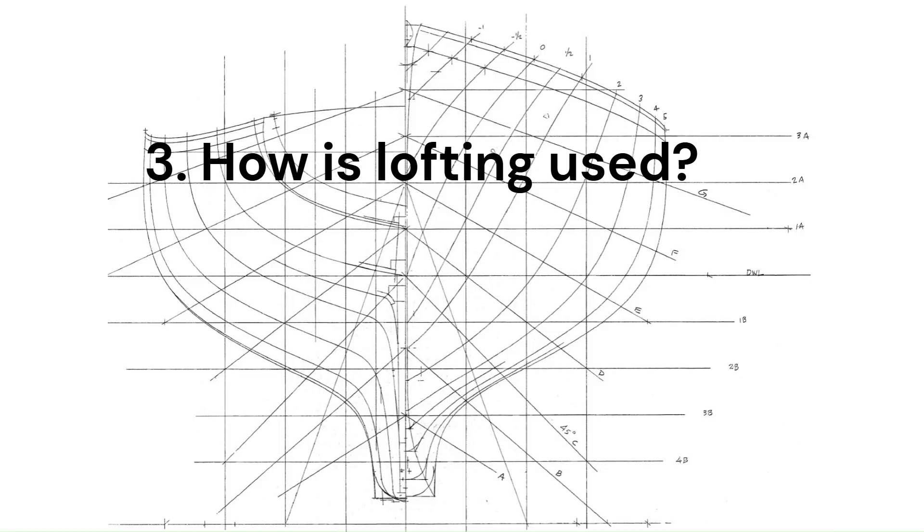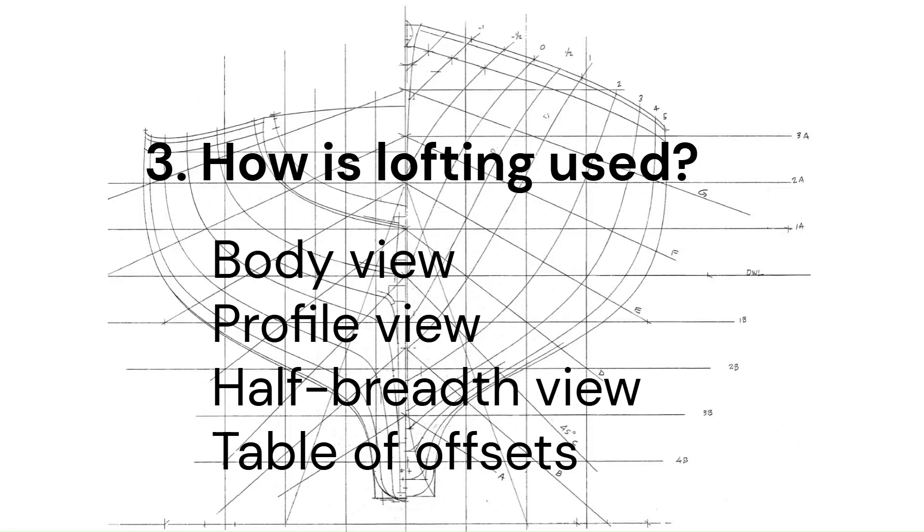Three, how is lofting used? Whatever type of boat design, there are usually three types of major planes. Body view, profile view, and half-breadth view, plus a table of offsets. Of course, there are other drawings describing various things.